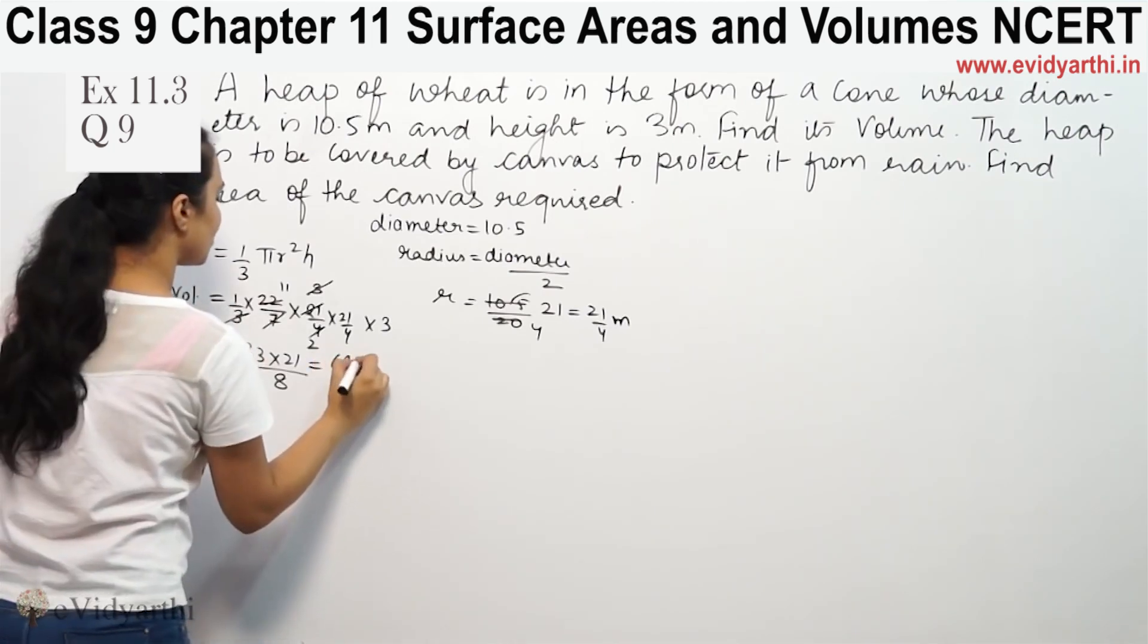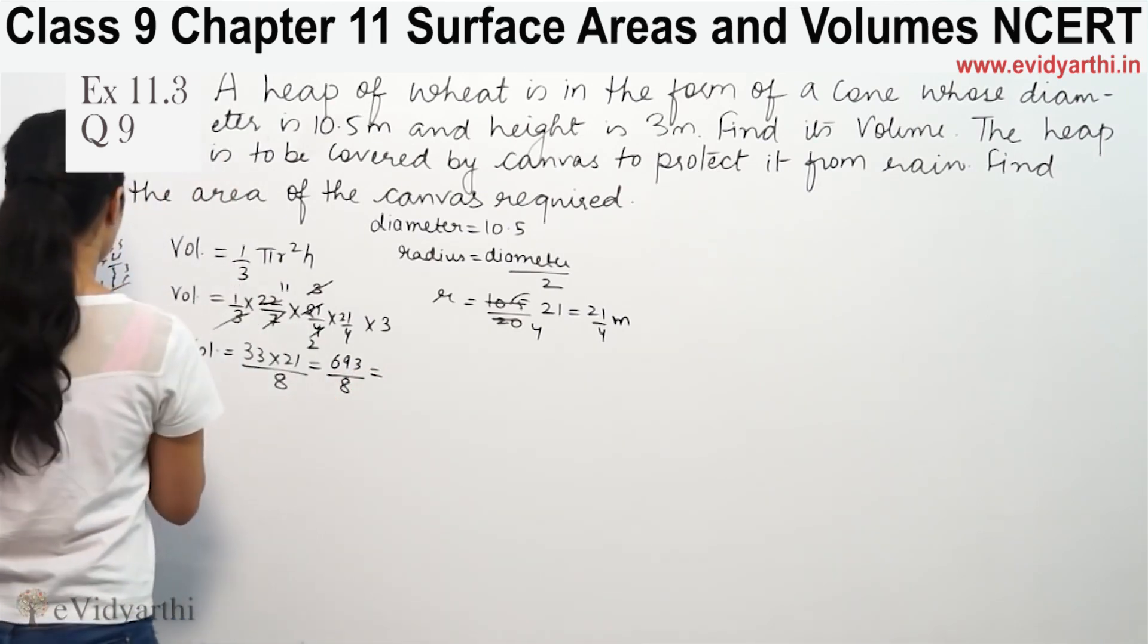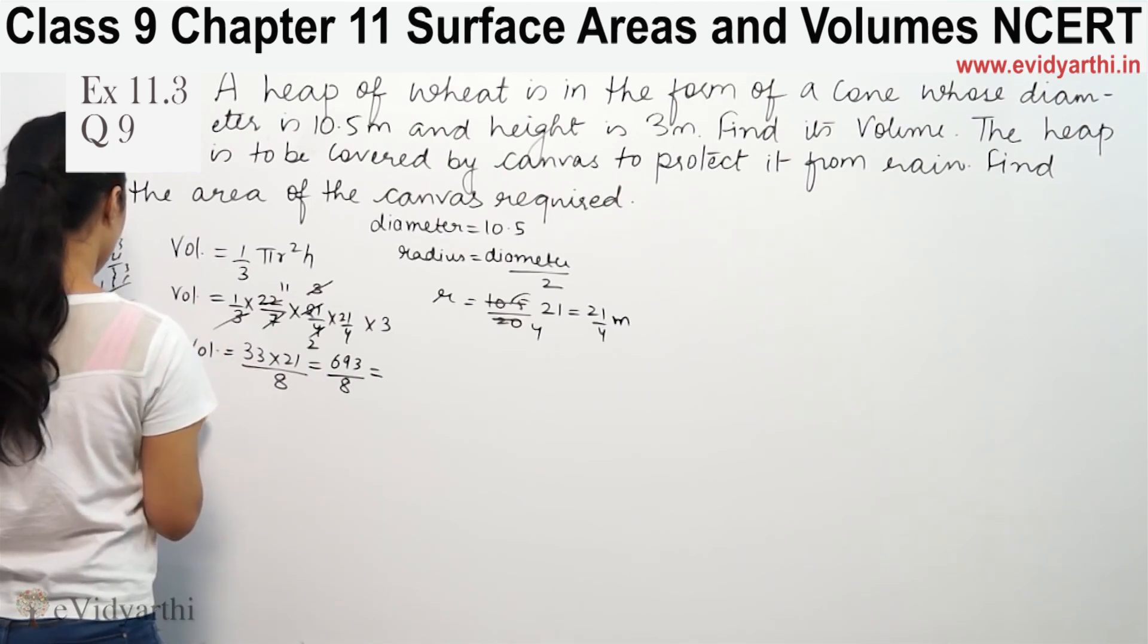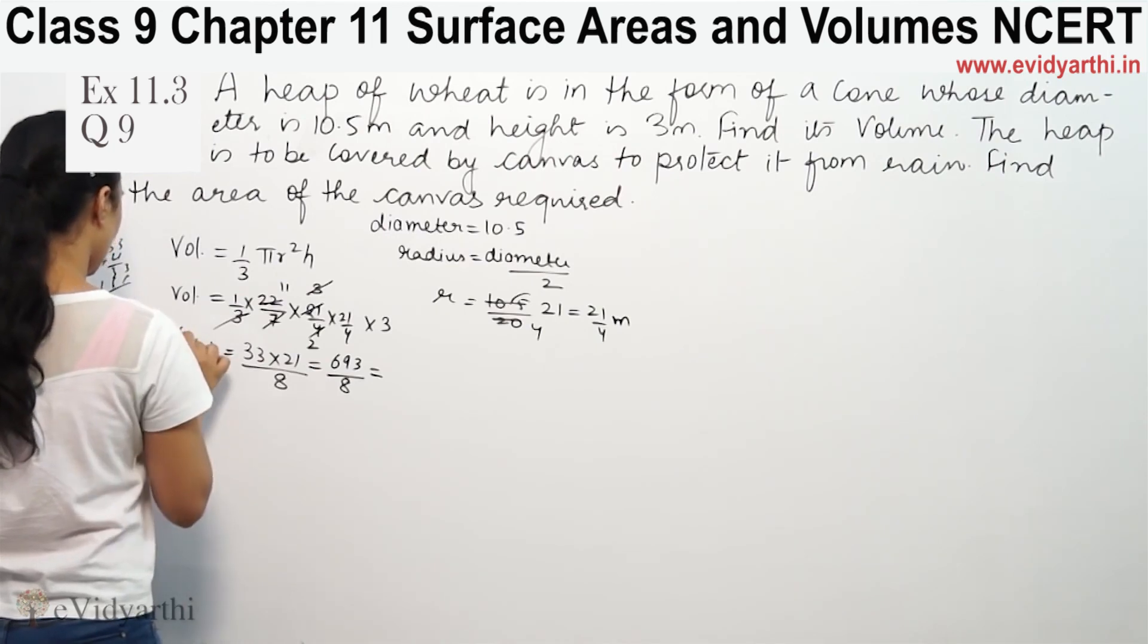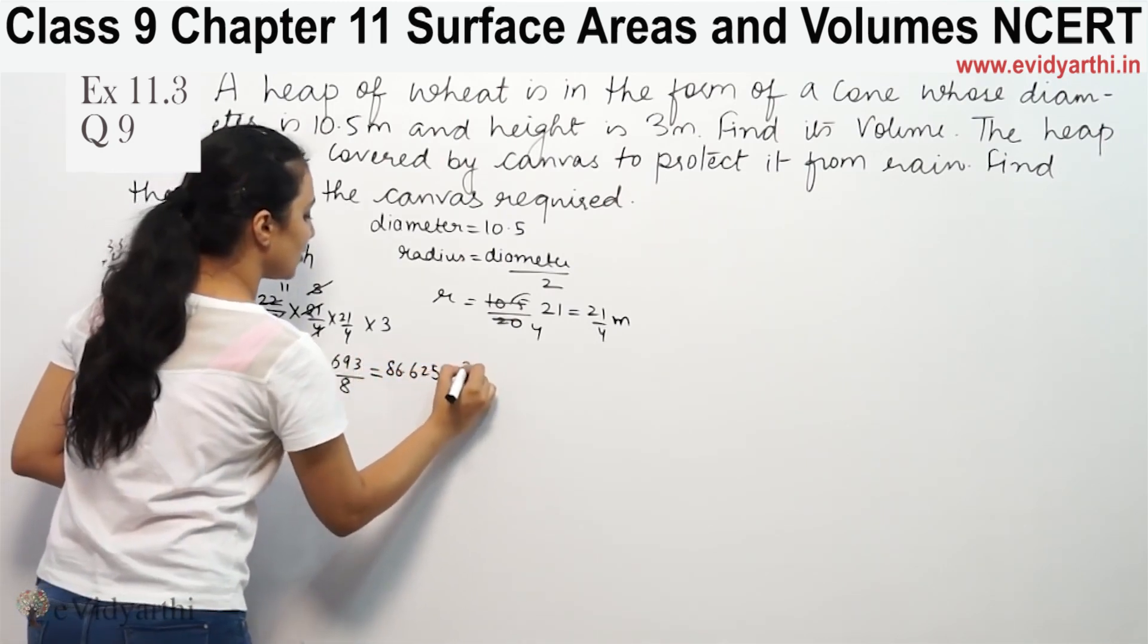So 33 into 21 equals 693 by 8. Dividing 693 by 8, we get 86.625 meter cube. So this is the volume of the heap.